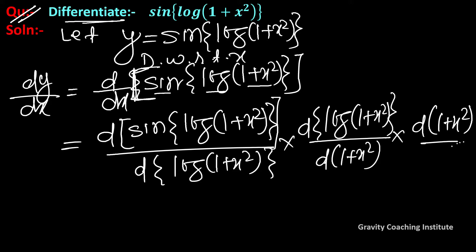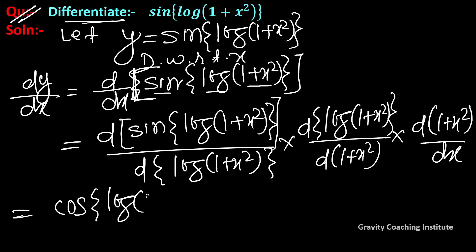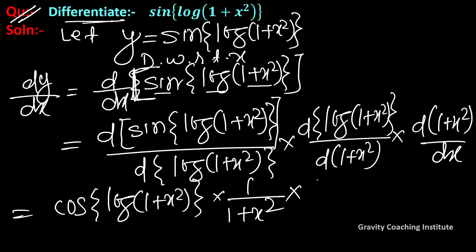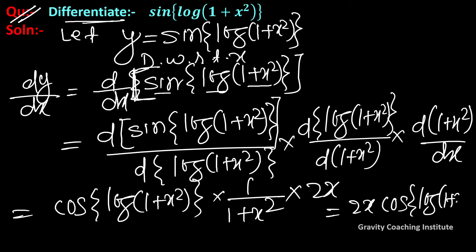Applying the chain rule: the derivative gives cos(log(1 + x²)) times 1 upon (1 + x²). So the final answer is cos(log(1 + x²)) upon (1 + x²).